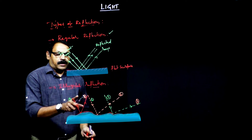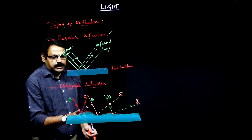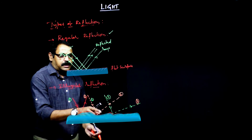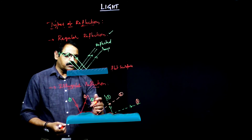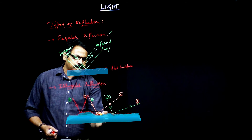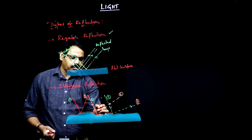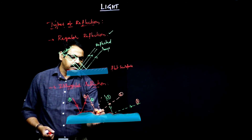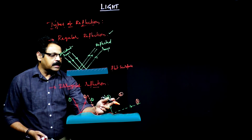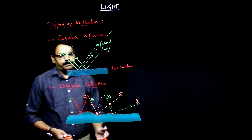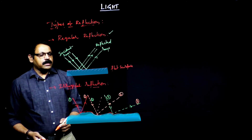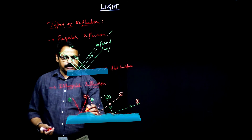See here, I is equal to R holds at each point, but the normal to the surface at each point is different. That is the reason the reflected ray goes in some other direction which may not be parallel to the others. So if the reflected rays are not parallel, then you call it as irregular reflection or diffused reflection.